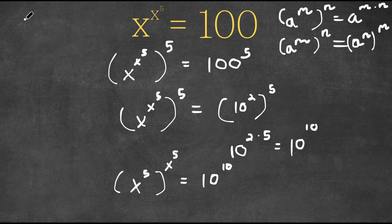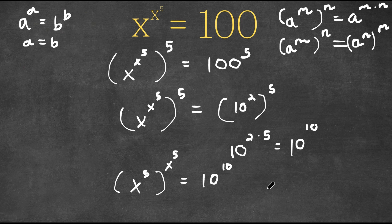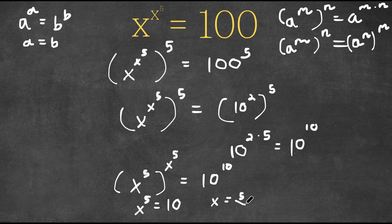And if we have something in the form a to the power of a is equal to b to the power of b, this means that a is equal to b. So in this case, x to the power of 5 is equal to 10, meaning x is equal to the fifth root of 10. So this is our answer.